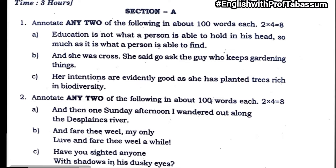Second set: annotate any two of the following in about 100 words each — these annotations are from poems. 'And then one Sunday afternoon, I wandered out along the Desplaines River' is from the poem 'Happiness.' 'And feel I weel, my only love' is from 'A Red Red Rose.' 'Have you sighted anyone with shadows in his dusky eyes?' is from 'The Beggar.'